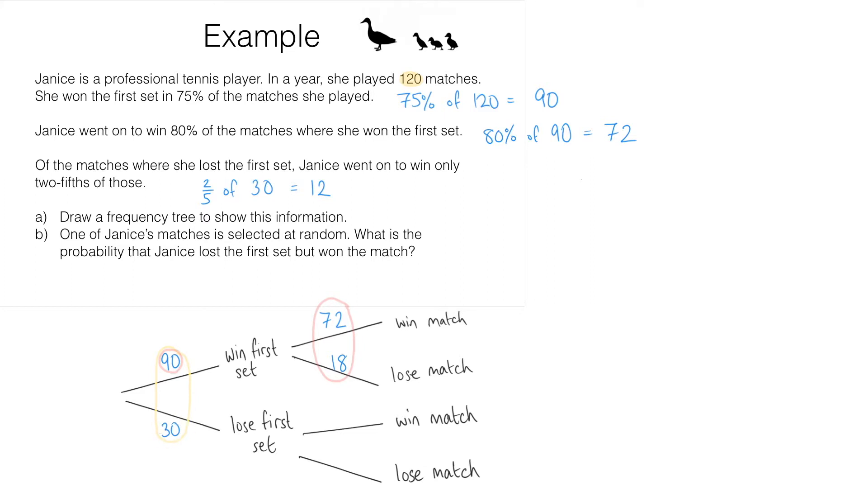So out of these 30 matches she's going to win 12 of them. That means she's going to lose all the remaining matches out of these 30. 30 minus 12 gives us 18, so she's losing these 18 matches. And again, just to be clear, these two numbers 12 and 18 need to add up to 30. Here we have the frequency tree. We've now answered part A of the question. In part B the question says one of Janice's matches is selected at random. What is the probability that Janice lost the first set but won the match?